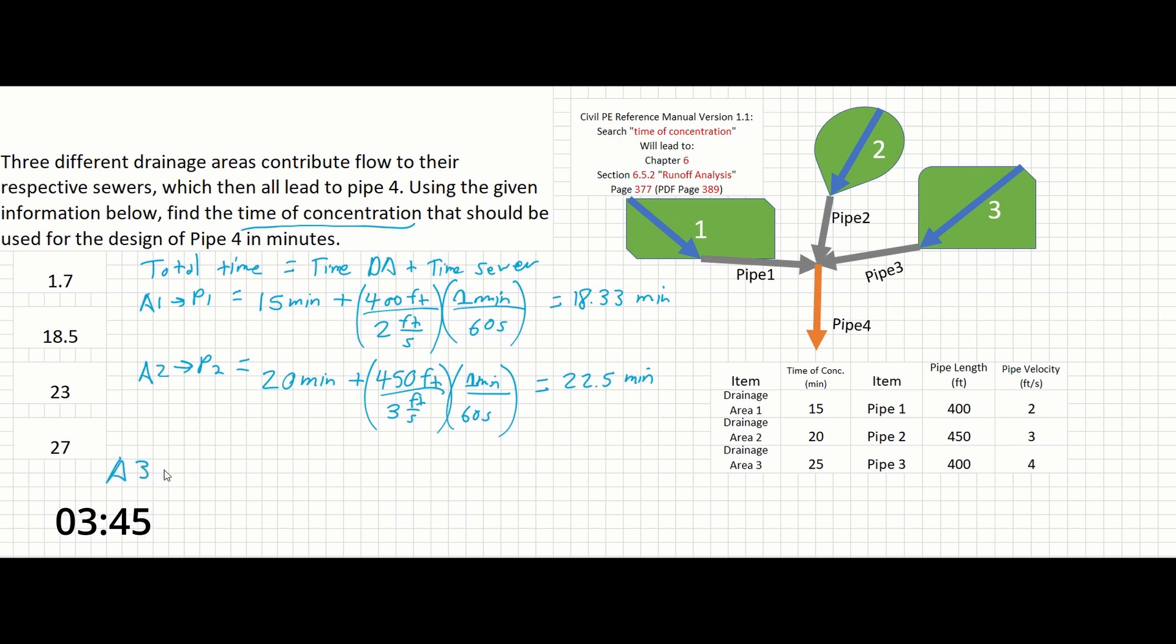And then finally we have A3 to P3. That's going to give us 25 minutes to drain out of the basin, or rather, that's the longest time for the entire basin to contribute, plus 400 feet over 4 feet per second times 1 minute over 60 seconds. And that's going to give us 26.67 minutes.